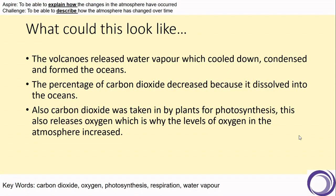So now on the screen you can see a six-mark answer for this question. If you read through each bullet point you can see how each change was linked to an explanation. For example, the oceans formed because water vapour cooled down and condensed. On the next bullet point they've said that the carbon dioxide percentage decreased because it dissolved into those oceans. In terms of photosynthesis, that was linked to two changes. Have a look at what you got, see how many of those points you covered, and then you can move on to any follow-up activities linked to this video. See you in the next lesson!